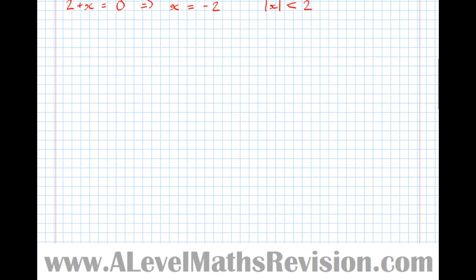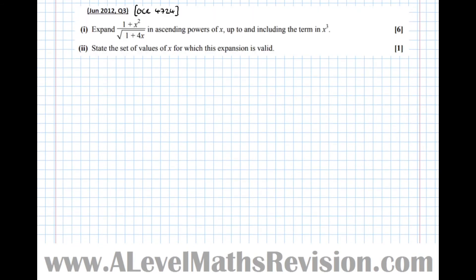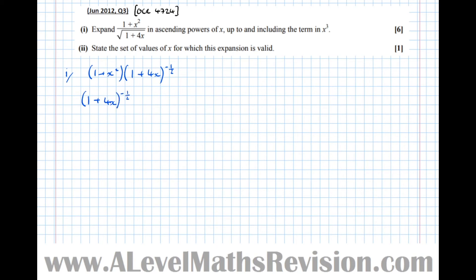Now let's look at an exam question. This one asks us to expand (1 + x²) over the square root of (1 + 4x), up to and including the x³ term. Notice that rather than being a quotient, we can rewrite this as the product of two functions: (1 + x²) multiplied by (1 + 4x) to the minus 1/2.